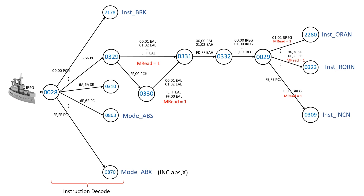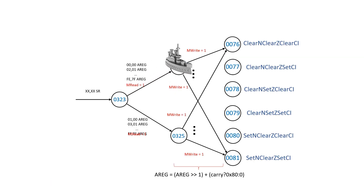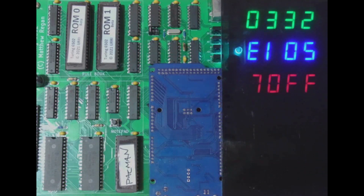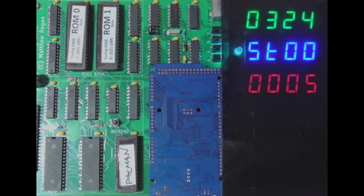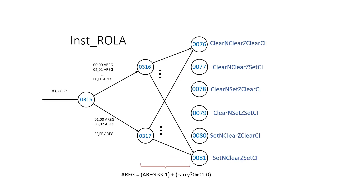For rotate right zero page, we should go through rules 28, 329, 331, 332, 29, 323, 324, and back to 76. Now let's compare this against what the machine actually does. This is a random fragment of code taken from Pac-Man for the rotate right instruction, and we can see it works properly. There are also state machines for logical shift right and rotate left, but I won't go over them in this video.